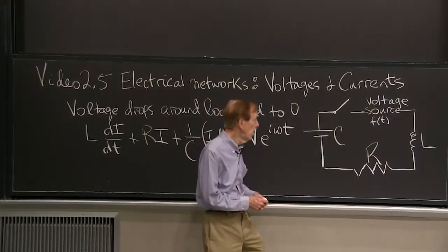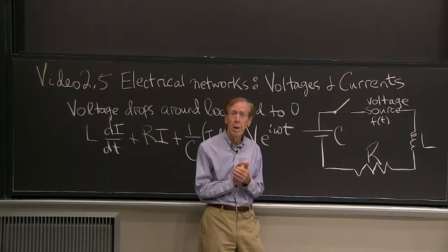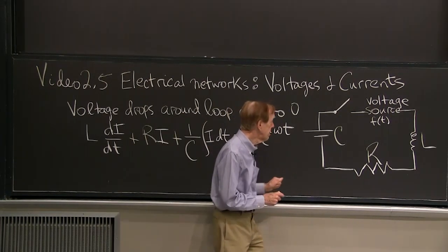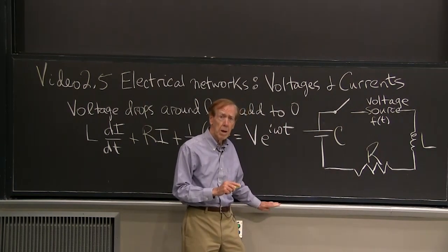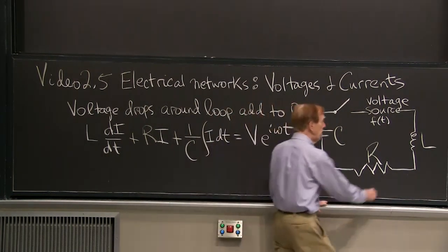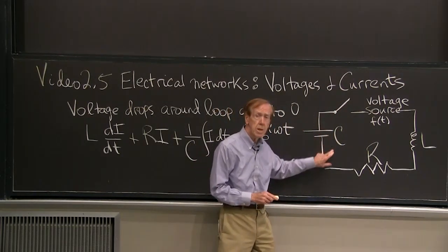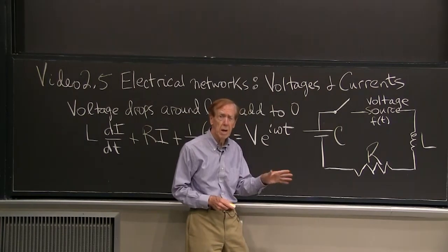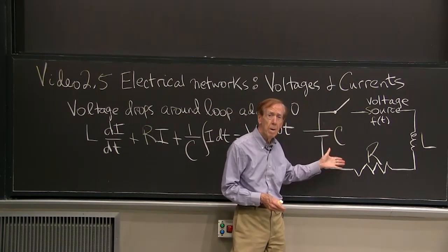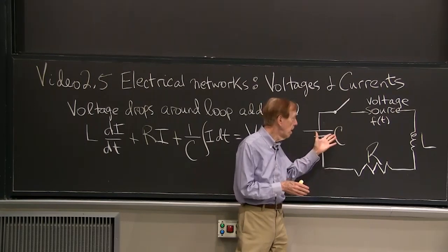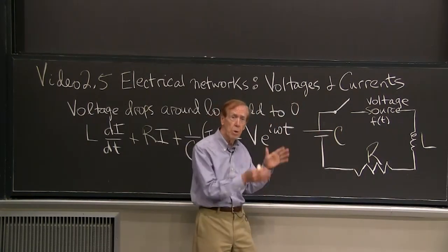It's just called an RLC loop. It's only got one loop, so it's a really simple network. The R stands for resistance to the flow. The L stands for inductance. And the C is the capacitance. Those are the three elements of a simple, linear, constant coefficient problem associated with one loop.